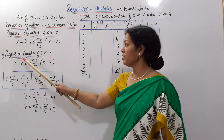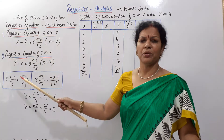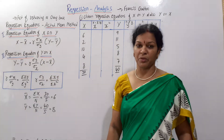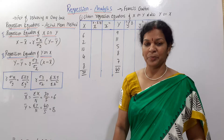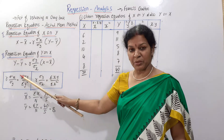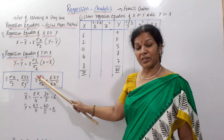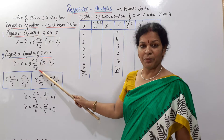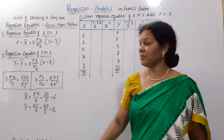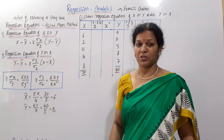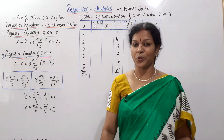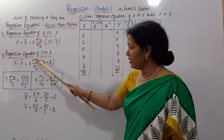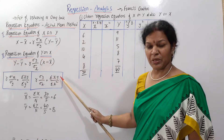The regression equation of y on x starts with y. The formula is: y minus ȳ equals r times (ρy / ρx) times (x minus x̄). This is equivalent to σxy divided by σx². So for x on y we use σy² in the denominator, and for y on x we use σx².